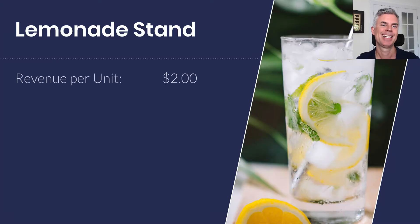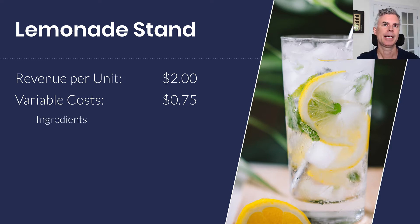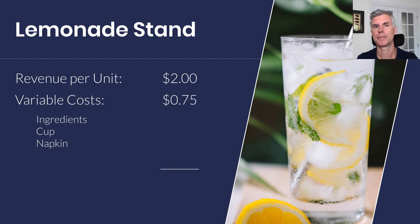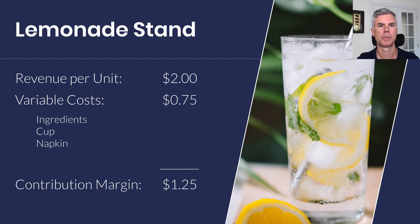Classic lemonade stand: revenue per unit — we're selling glasses of lemonade for two bucks. Variable costs are the key here. Variable costs are 75 cents — those are the ingredients, the cup, and a napkin. The variable cost might also include a marketing brochure. If you take the $2 of revenue and subtract the 75 cents of variable costs, you're left with what's called a contribution margin.